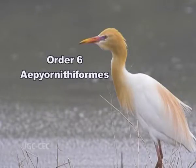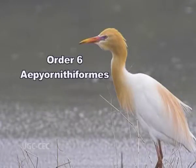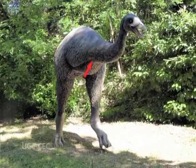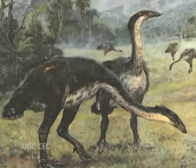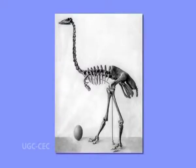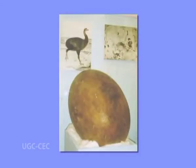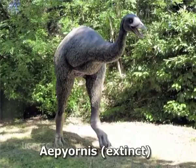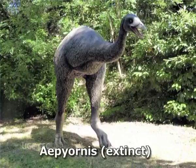Order 6, Aepyornithiformes. Flightless terrestrial extinct elephant birds. Wings vestigial or tiny. Legs powerful with four toes. Sternum short, broad and without keel. Eggs are surprisingly large. Example: Aepyornis, which is now extinct, also called the giant elephant birds of Madagascar.